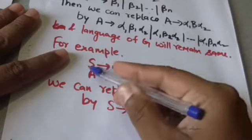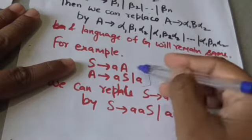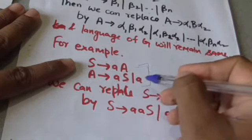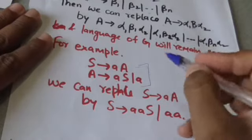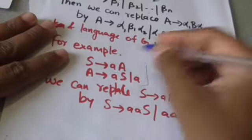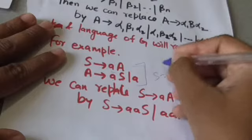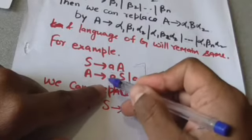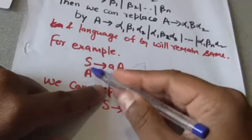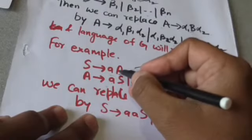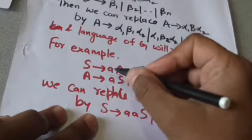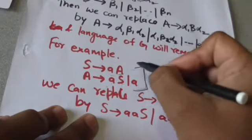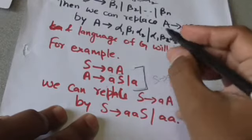Suppose there is a grammar G which has these productions: S derives A A, A derives A A S, A derives A. We can replace a production by the productions obtained by replacing the variable B by the strings which are on the right-hand side of the productions of that variable. When we replace this production by those productions, the language generated by this grammar will remain the same.